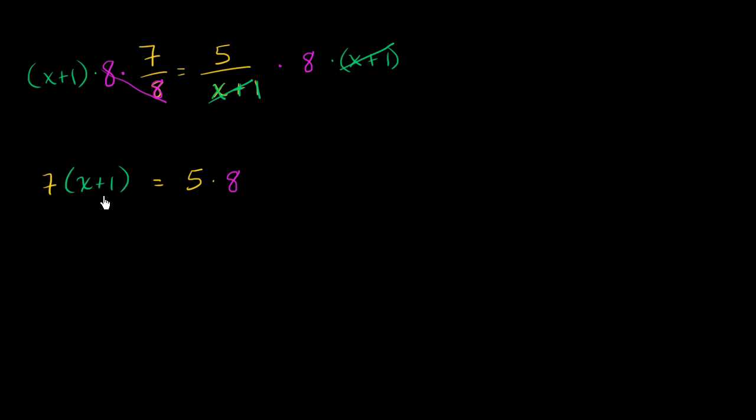Notice, this is exactly what you have done if you were to cross-multiply. Cross-multiplication is just a shortcut of multiplying both sides by both denominators. We have 7 times x plus 1 is equal to 5 times 8. And now we can go and solve the algebra.